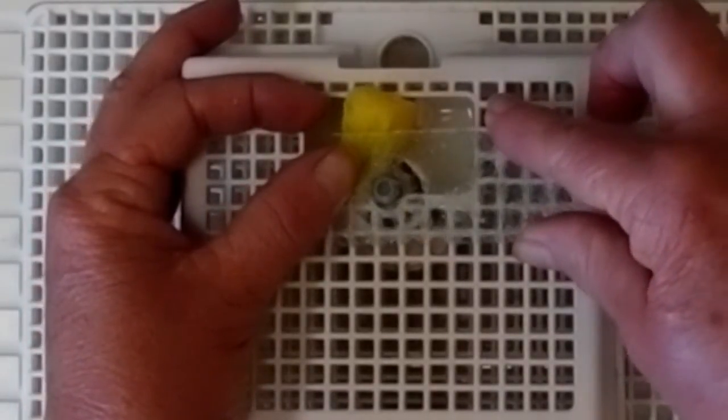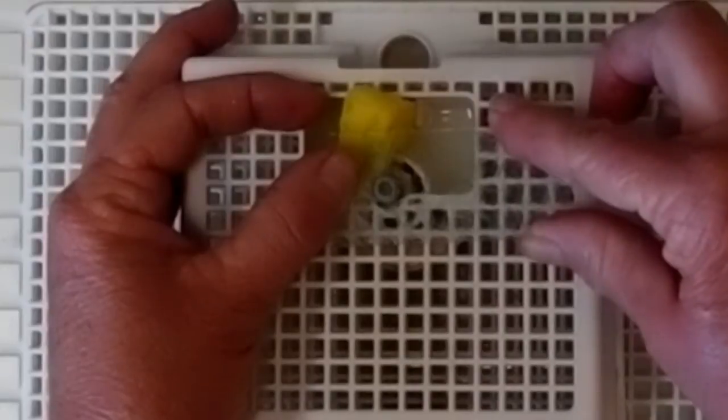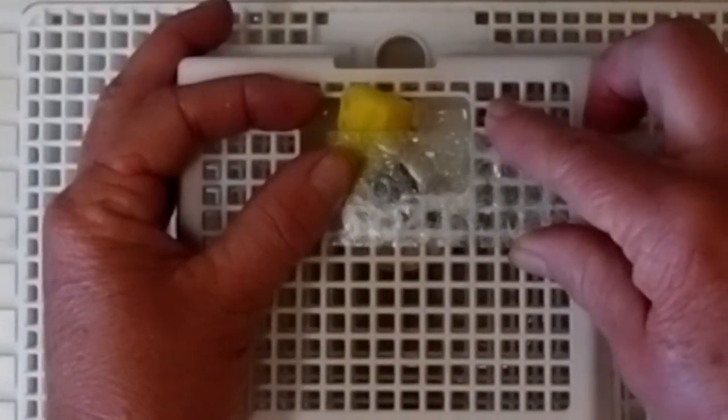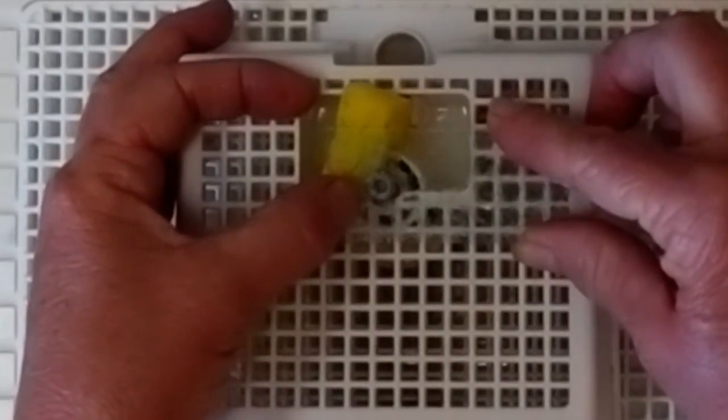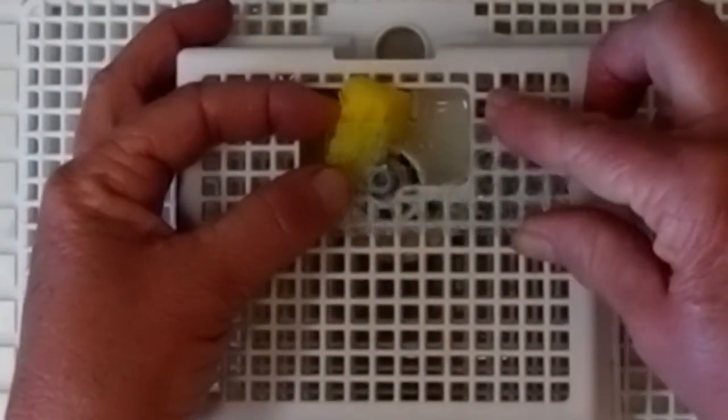Once again, let the bit do the work. You don't have to push hard. As it nears the backside of the glass, you want to lighten up and ease off on the pressure. This will help keep it from chipping out the backside.